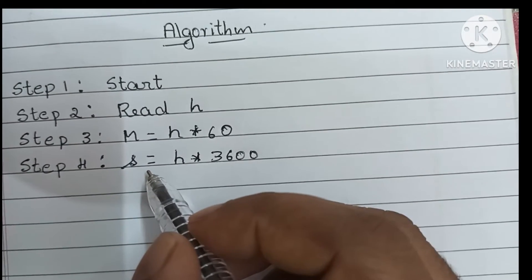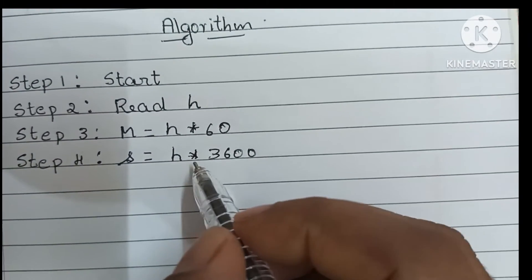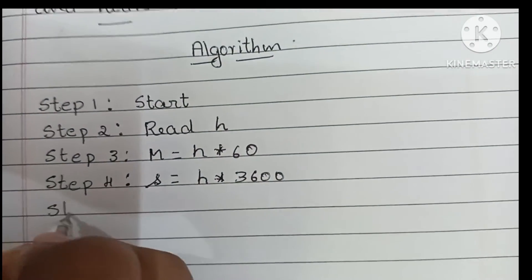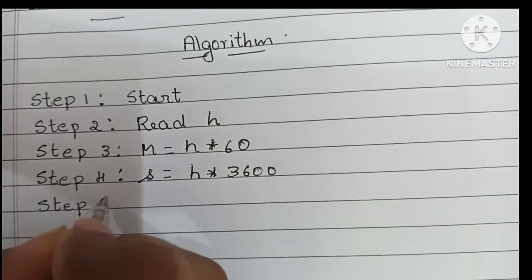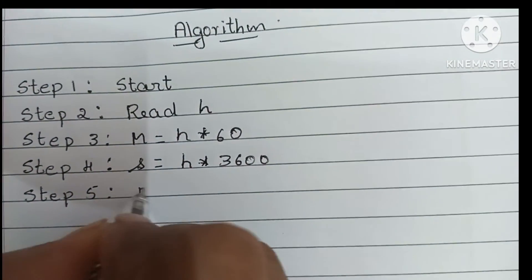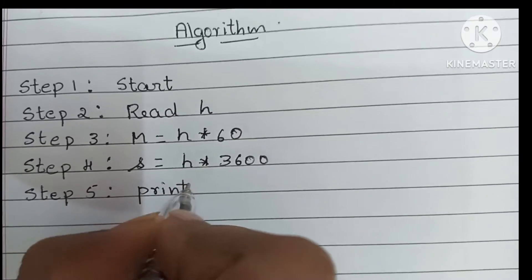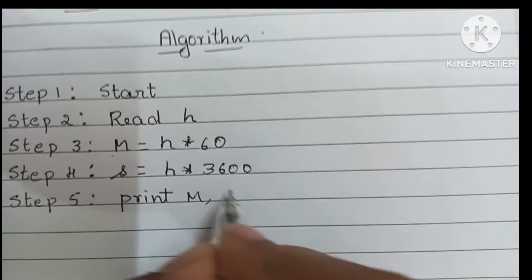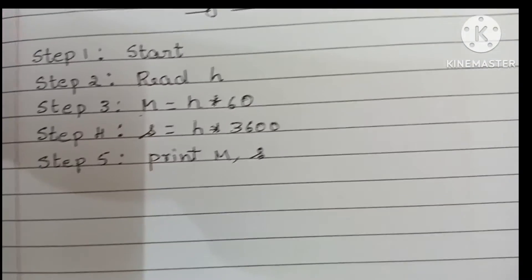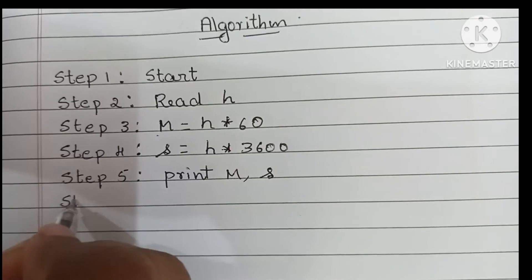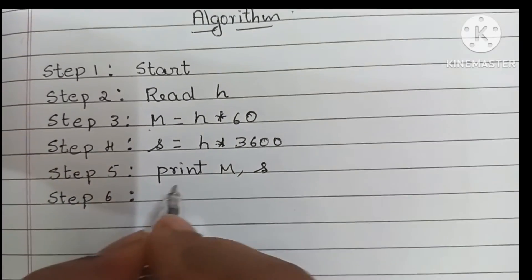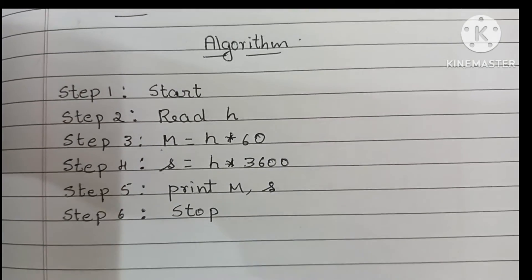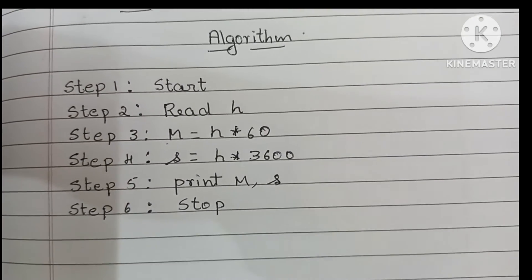In step 5 we have to display the output using a print statement. Here we display m and s. In step 6 we have to stop the algorithm using the stop statement. This is the algorithm to convert hours to minutes and hours to seconds format.